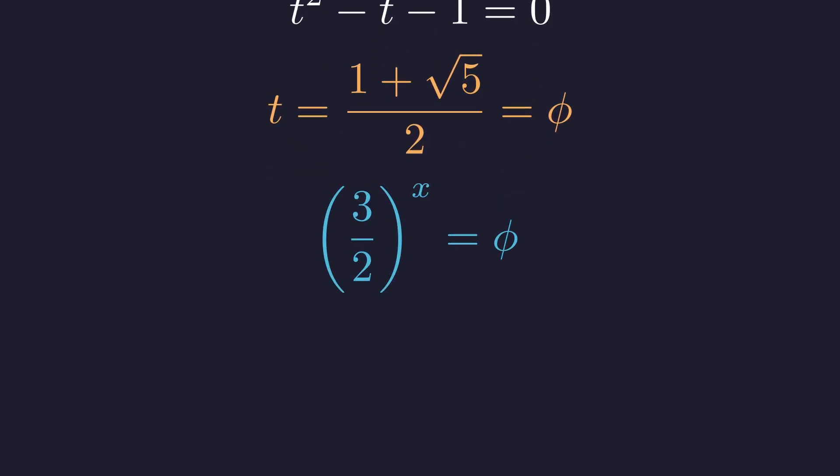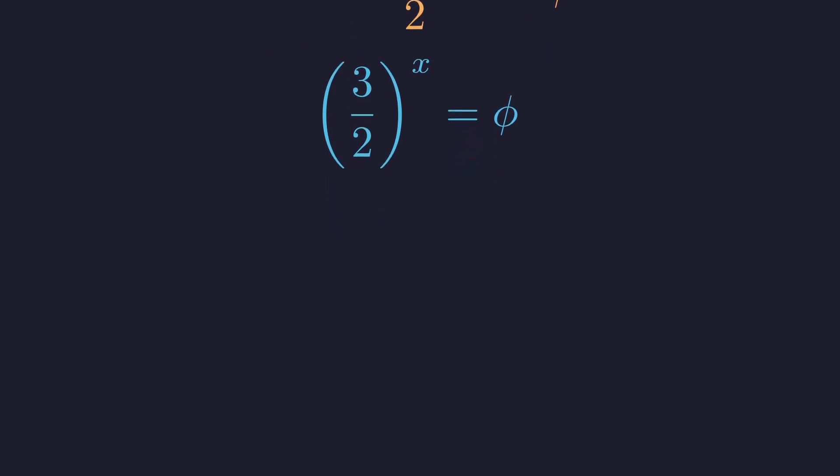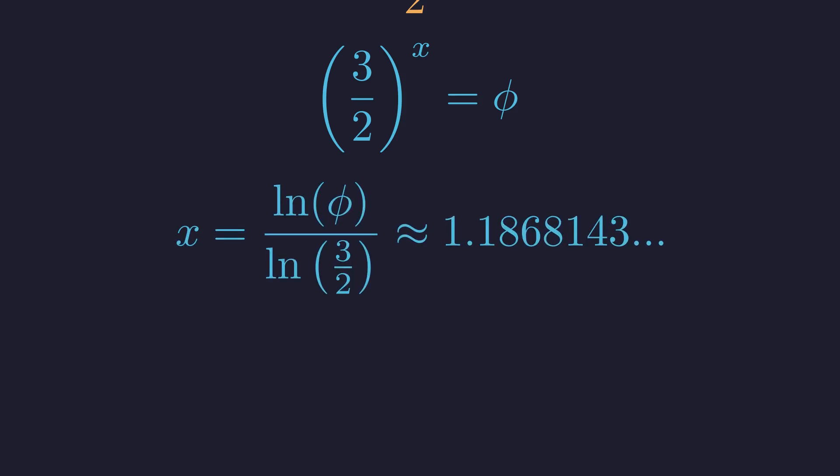Substituting back, we find that our original equation is equivalent to finding when 3 over 2 to the power of x equals the golden ratio. This reveals the direct connection between our equation and the golden ratio. This yields the same numerical value but with a more meaningful algebraic form that directly involves the golden ratio.